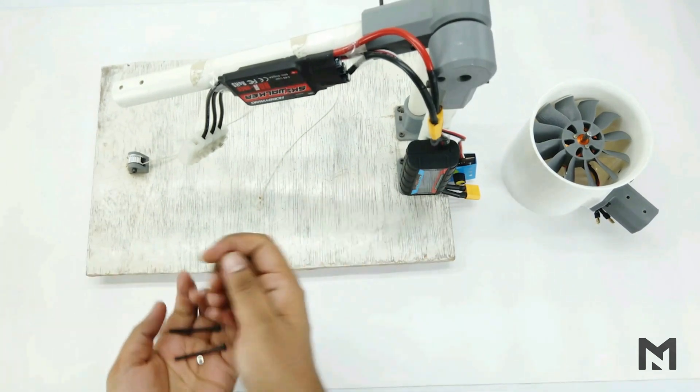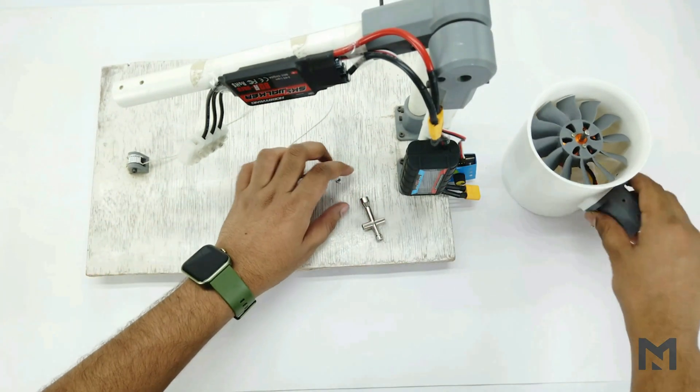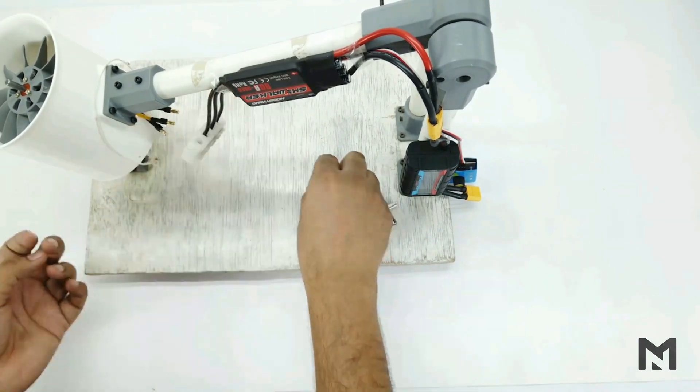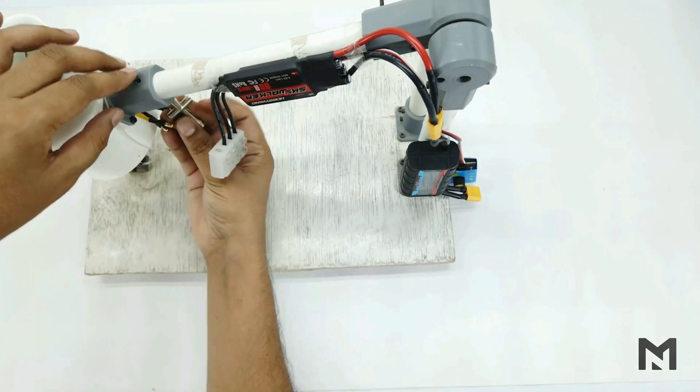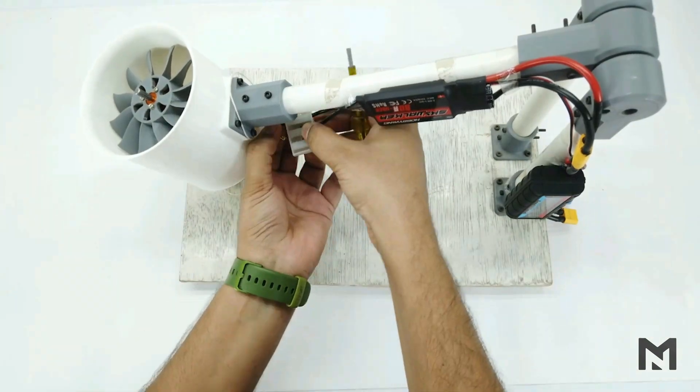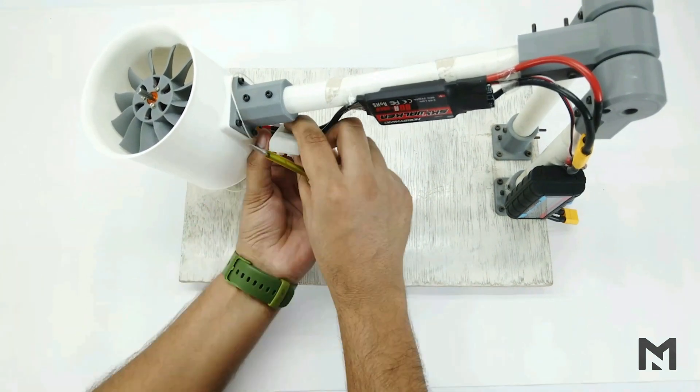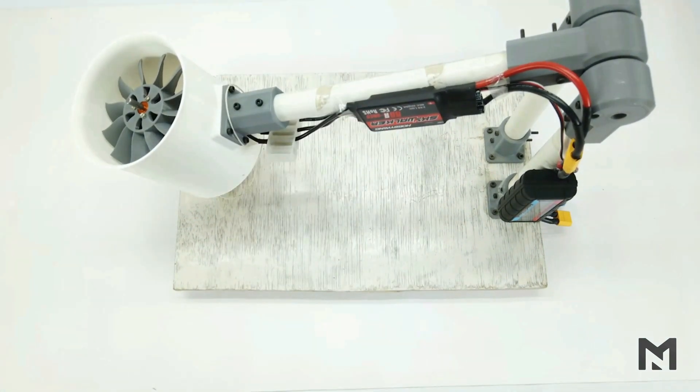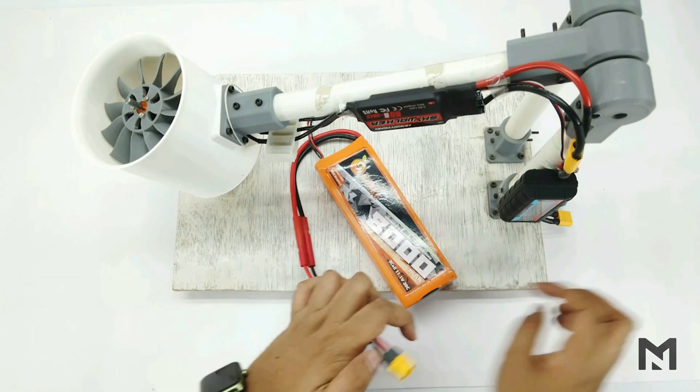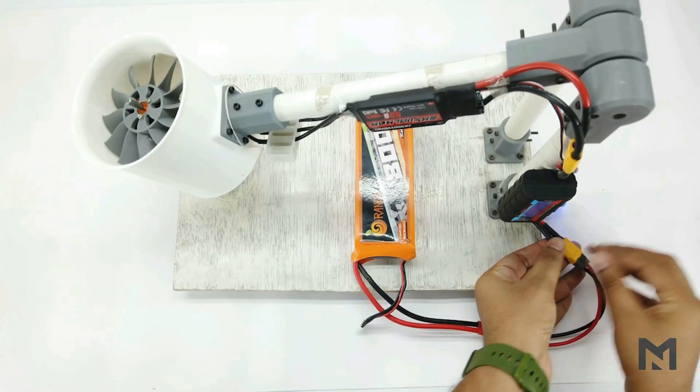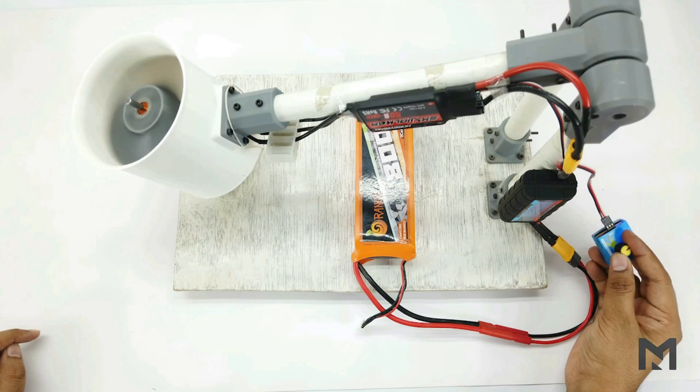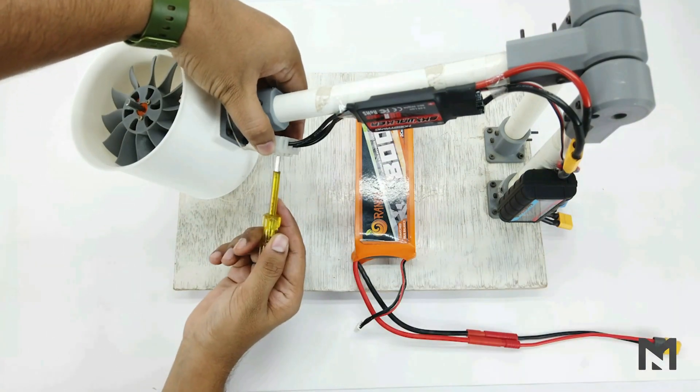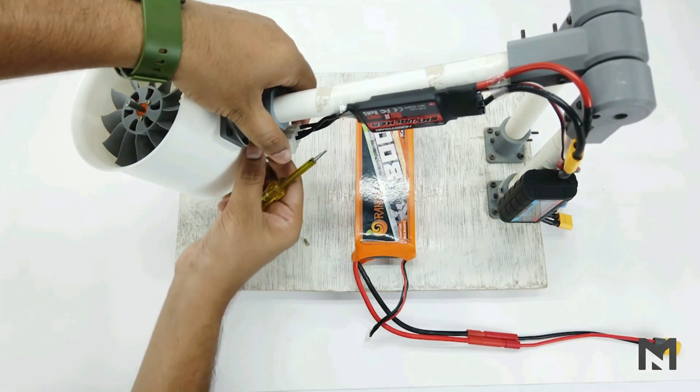So this is my test rig and you have seen it in my previous videos. Now I will connect this EDF with it. Now I will connect the battery to check the direction of the motor. And the direction is reversed. And since the direction is reversed. So just swap any two wires to correct the direction.